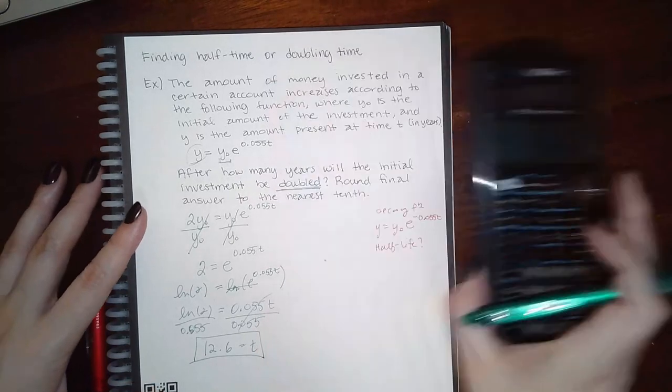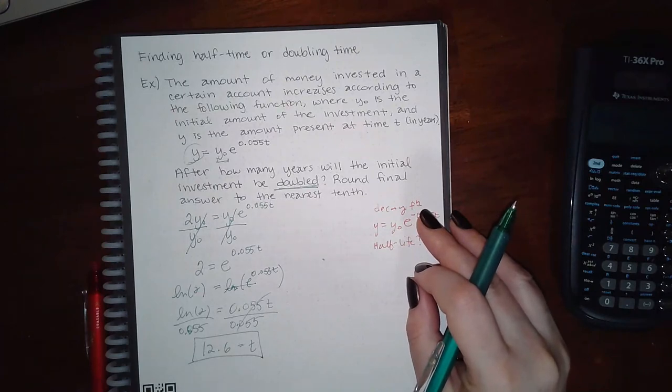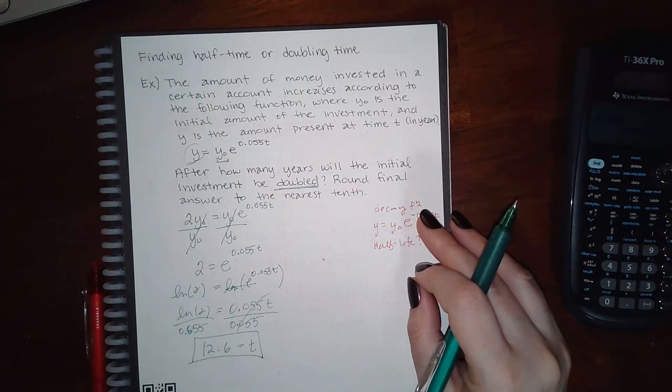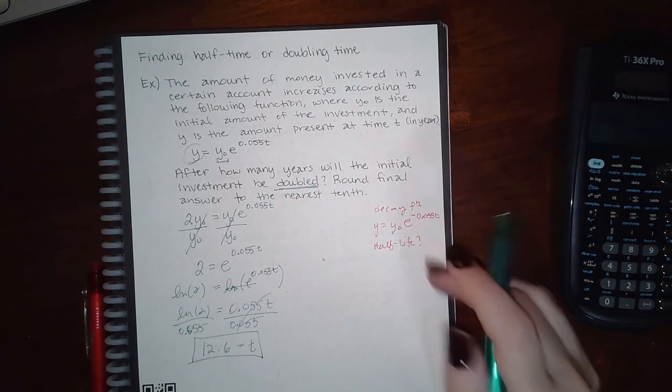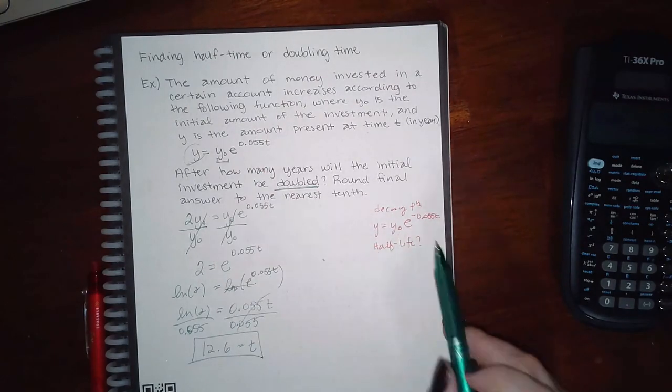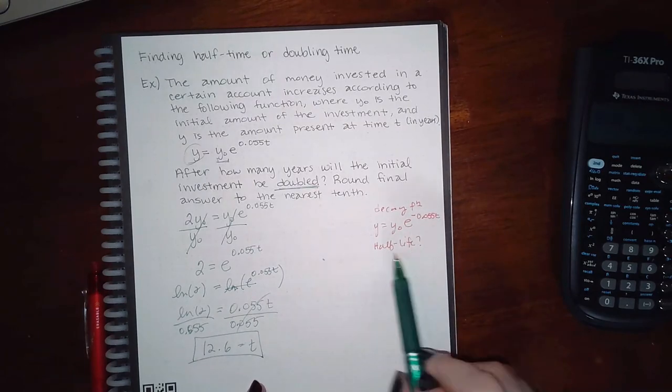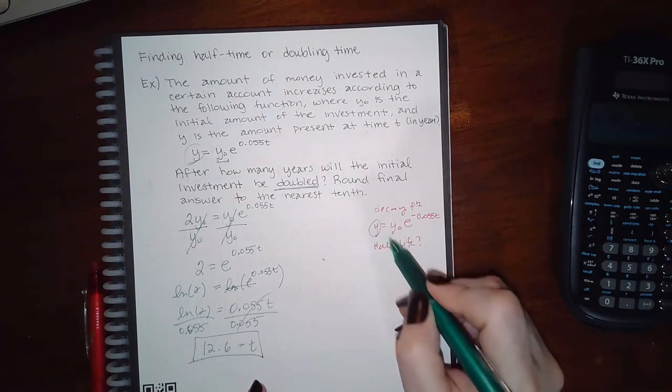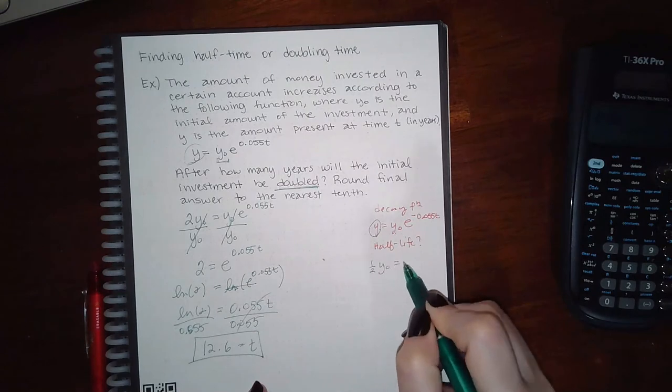Okay, now had this been not a growth problem, but let's say it had been a decay problem where they're talking about a radioactive substance or some kind of population dying off, something that's decreasing as time goes by—if they're talking about a decay function, the only difference between this function and my function is that the rate would be negative. And if I'm asked to find the half-life instead of putting double this amount here, I would be putting half of that amount over there on that side.